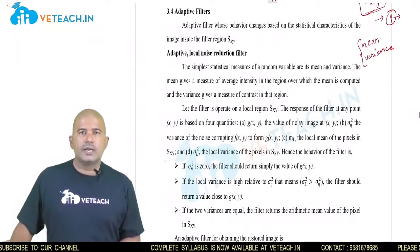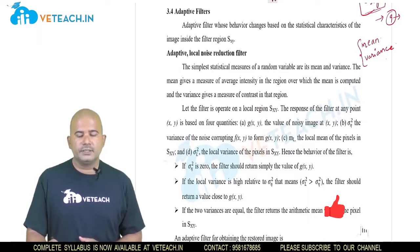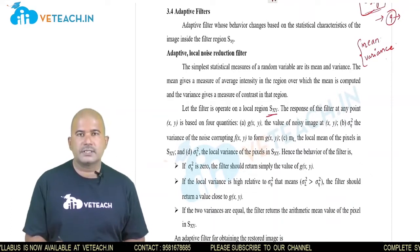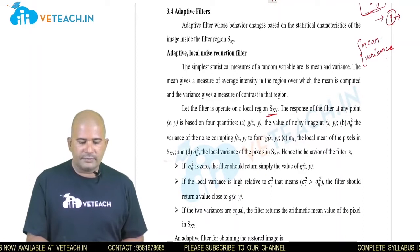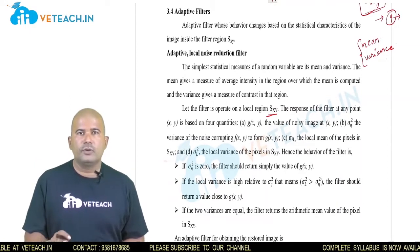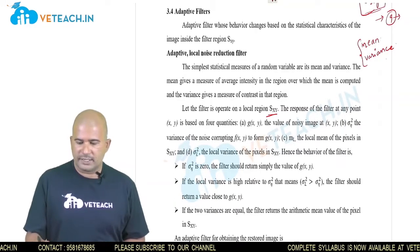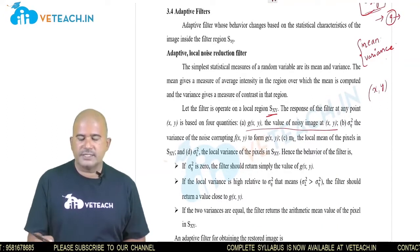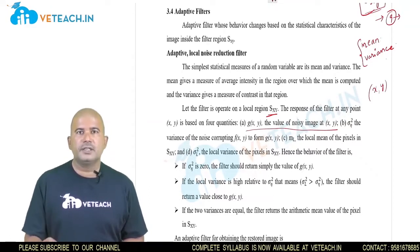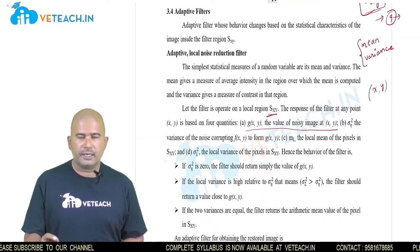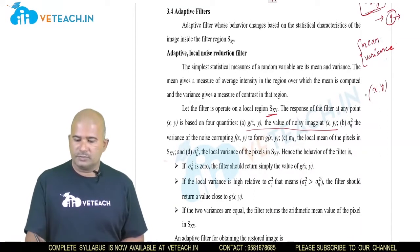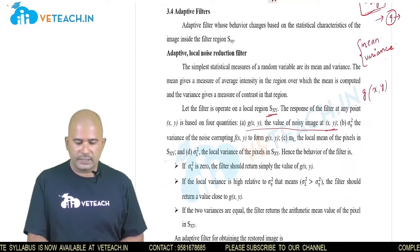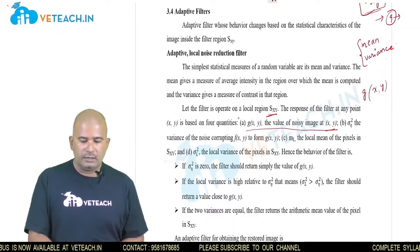Let us see the procedure applied for local noise reduction using an adaptive filter. We operate on region s(x,y). The response of the filter at any point is based on four quantities. The first quantity is g(x,y), the value of the noisy image at position x,y. We assume that the image is corrupted by noise, so g(x,y) is the noisy image — the value at any position x,y is the first quantity to be considered.